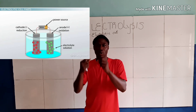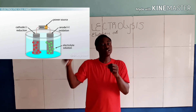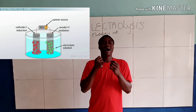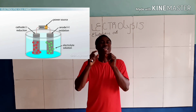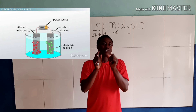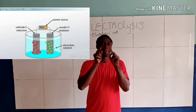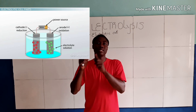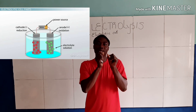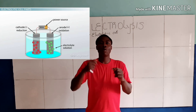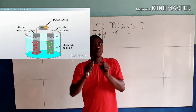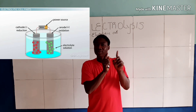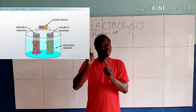This electrolytic cell contains an electrolyte. What is an electrolyte? An electrolyte is a compound that conducts electricity in liquid form. This liquid form can be in a solution or melting state. An electrolyte conducts electricity by means of ions.